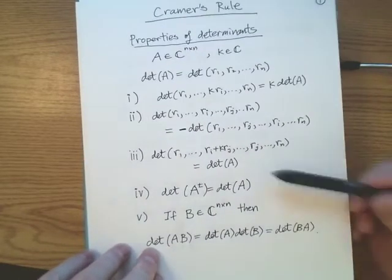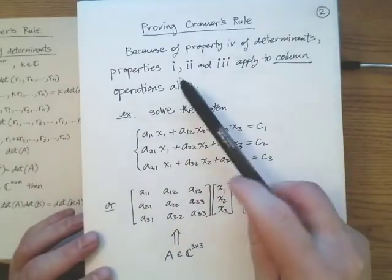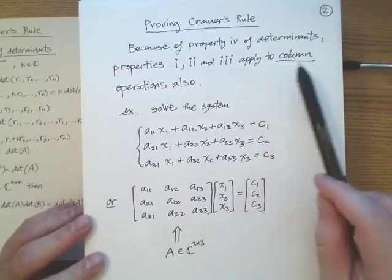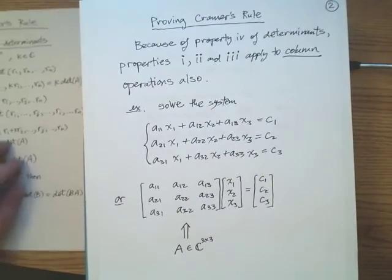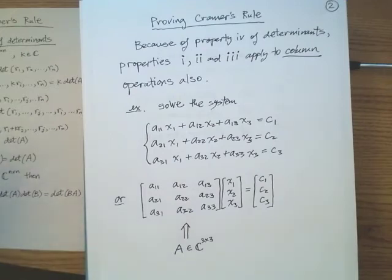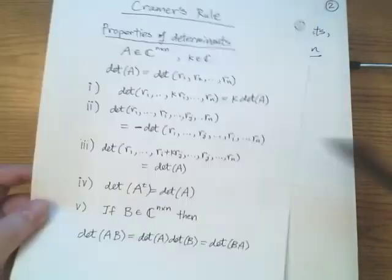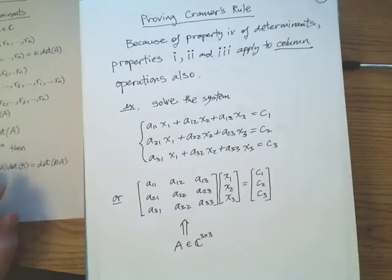This is the property I really want to focus on for Cramer's Rule. Because of the transpose property, properties one, two, and three apply to elementary column operations also. If I multiply a column of the matrix by a scalar I can bring that scalar outside the determinant. If I interchange two columns the determinant changes sign. And if I add a multiple of one column to another column, the determinant is unchanged.